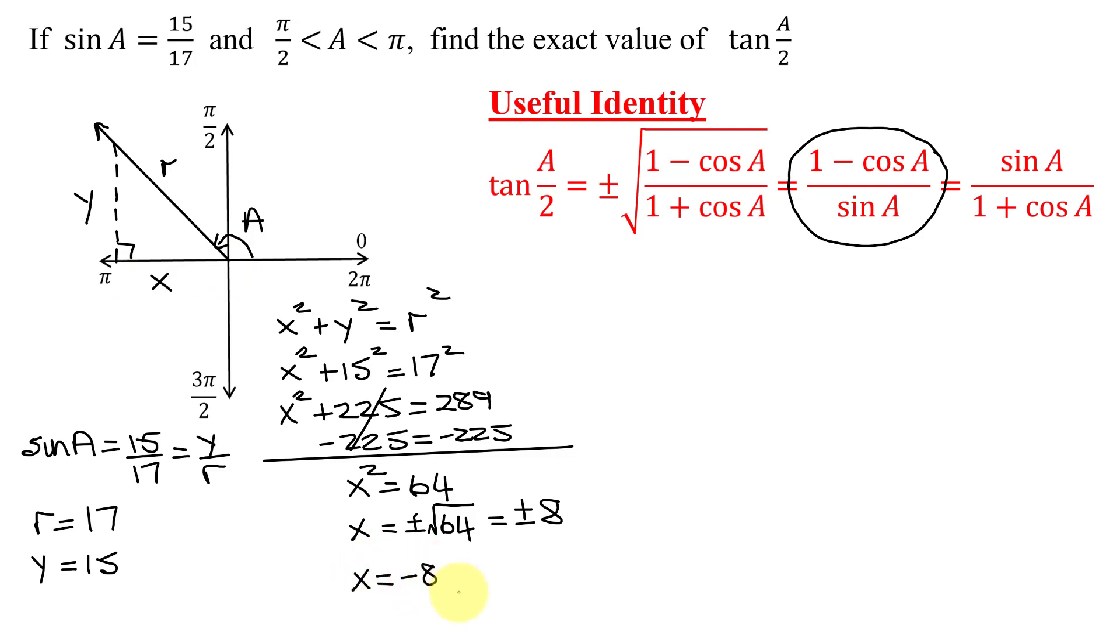It's going to be negative 8. So now I can find the cosine of angle A, which is x over r, so it is negative 8 over 17. So now I can use this formula up here.